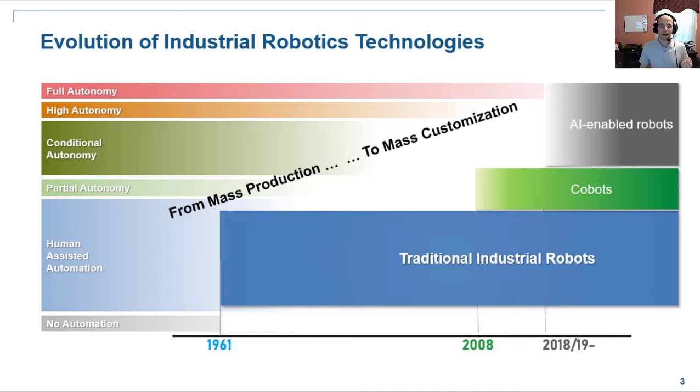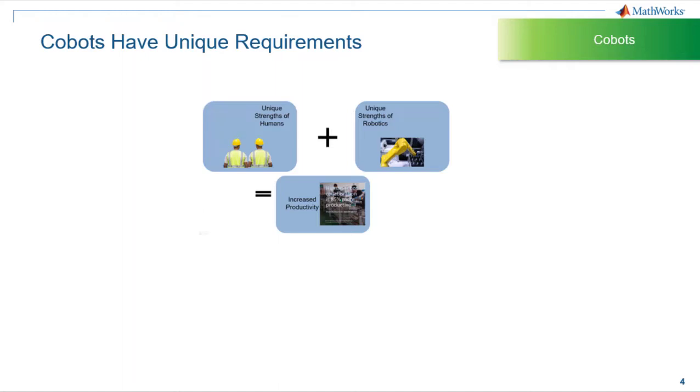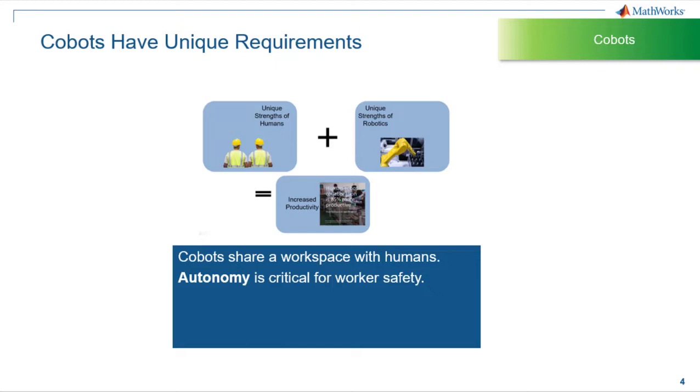But the overarching trend here that I want to highlight is that manufacturing is going from mass production to mass customization because more intelligence in robots means more customization of the manufacturing process. So I want to focus on these cobots again since they are just at this threshold of becoming economically viable and being deployed worldwide. So cobots impose unique requirements since they share workspace with humans and that requires them to have a certain level of autonomy for ensuring worker safety. They also operate in an environment that is both dynamic and unpredictable. So none of these cages of the traditional robots for cobots anymore.